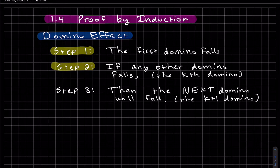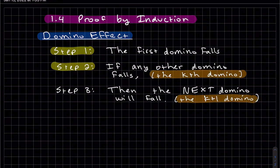If any other domino in the lineup falls, i.e., if the kth domino falls, then the next domino will fall, which would be the k plus 1 domino, and so on and so on.